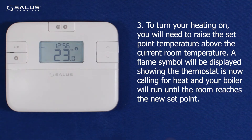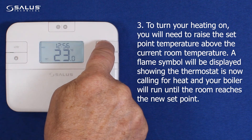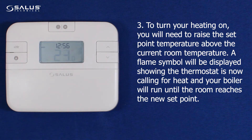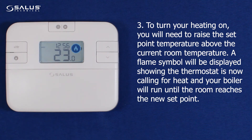Step 3: To turn your heating on, you will need to raise the set point temperature above the current room temperature. A flame symbol will be displayed showing the thermostat is now calling for heat, and your boiler will run until the room reaches the new set point.